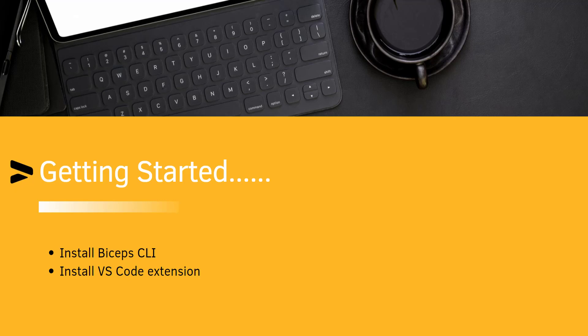To start with Azure Bicep, you need to install some tools on your machine, such as the Azure Bicep CLI, so you can run commands like build and deploy. Since Azure and Bicep are both Microsoft tools, you get great integration with Visual Studio Code — the world's most popular IDE. You can install the Bicep extension for VS Code, which provides IntelliSense to help you write infrastructure as code, showing available properties, default options, and allowed values for resource types.